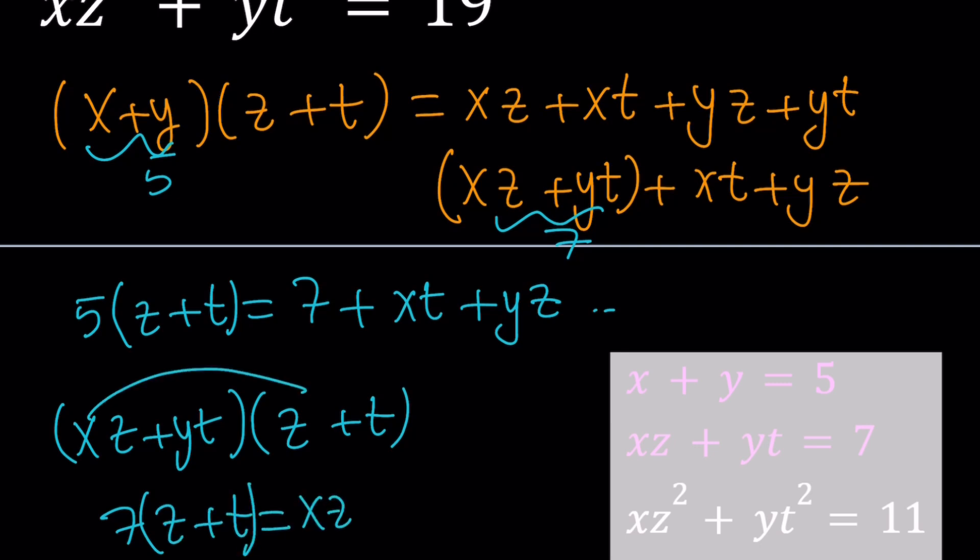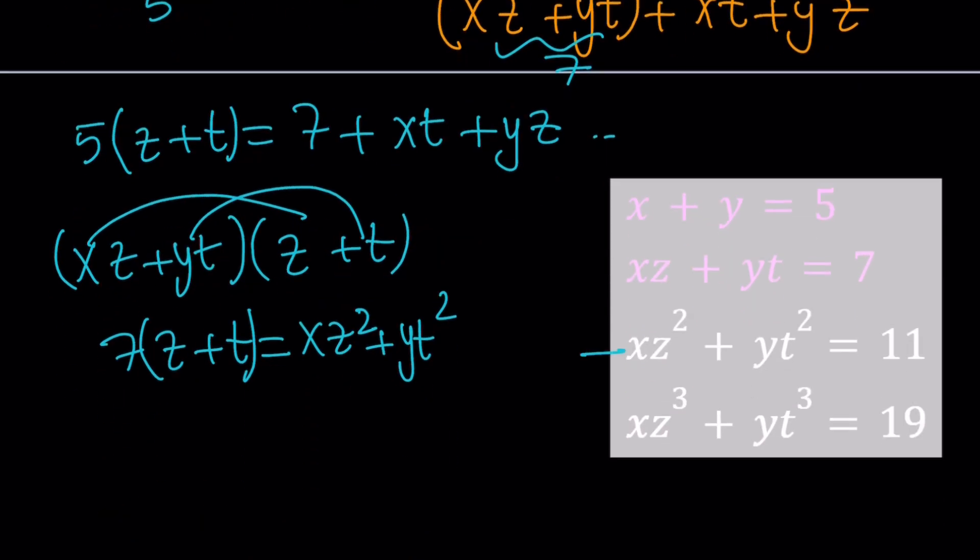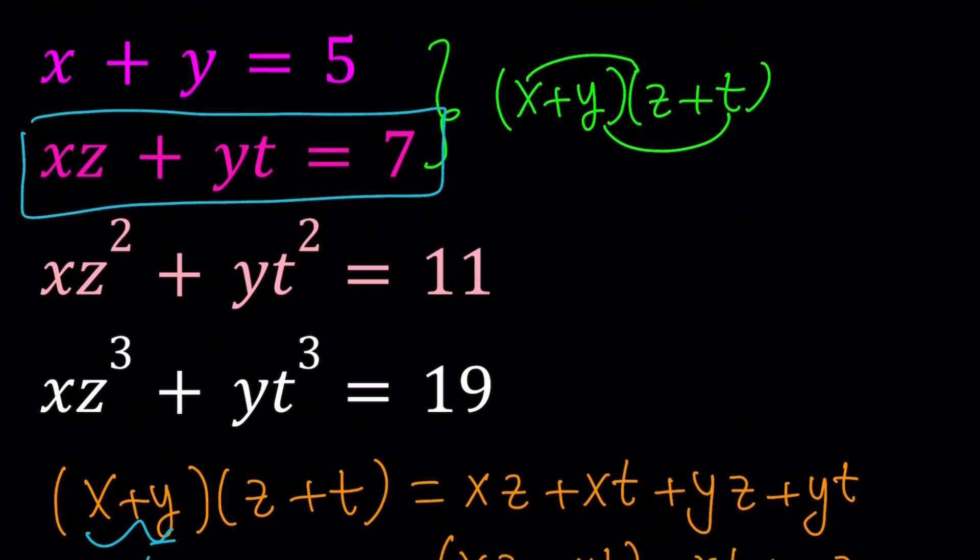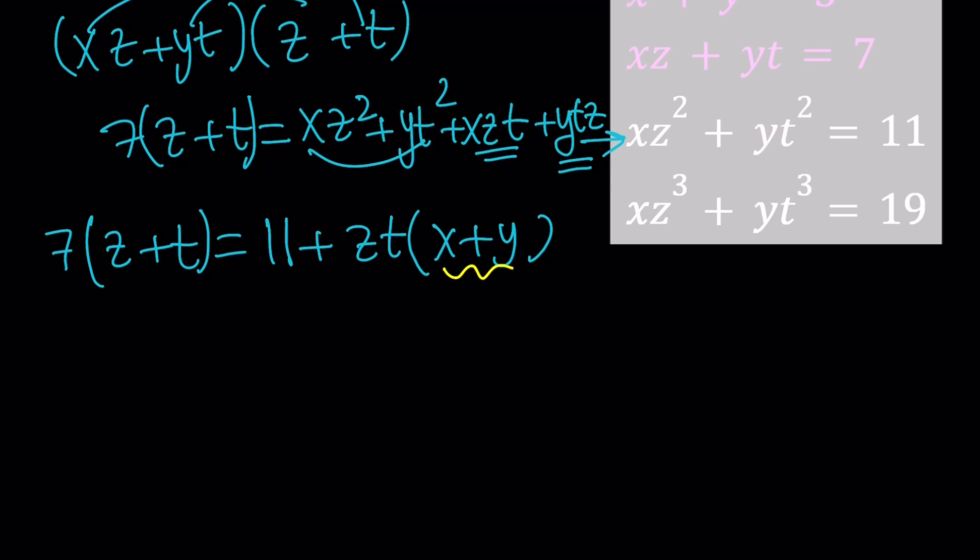Great. And on the right hand side, we're going to have xz squared. I'm going to write that first. And then allow me to just multiply these two, which is going to give me yt squared. And then notice that my second equation, the third equation here, I already obtained it. And the other terms are going to be coming from the xzt and yzt. Let's go ahead and rewrite this. Seven times z plus t. We know that xz squared plus yt squared is 11. Plus, what about xzt plus yzt? Well, they have zt in common. So why not take it out? Take zt out and you'll end up with x plus y. And guess what? We do know x plus y is equal to five. Yay, we found something. Great. So let's go ahead and replace x plus y with five. And that's going to give us something valuable. Seven times z plus t equals 11 plus 5zt. So this is probably going to be an equation we'll use later.